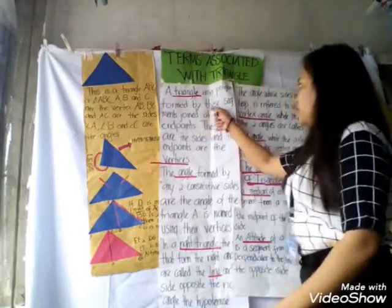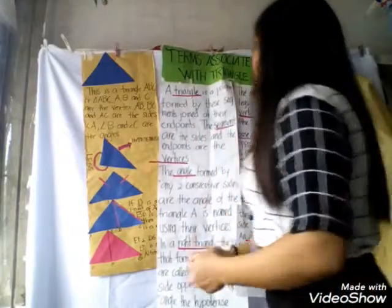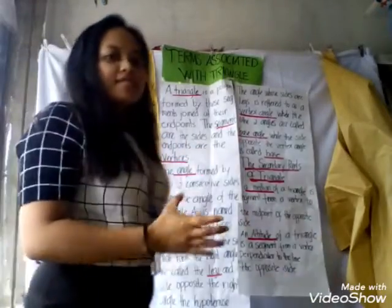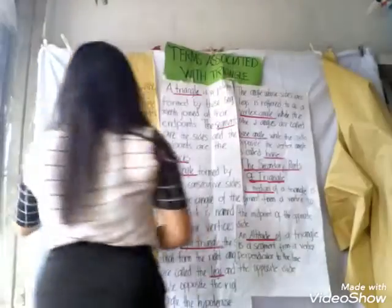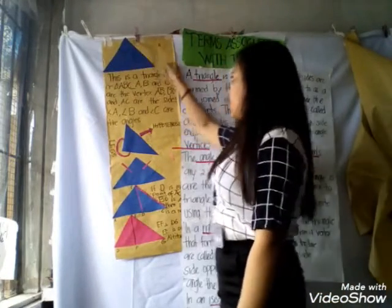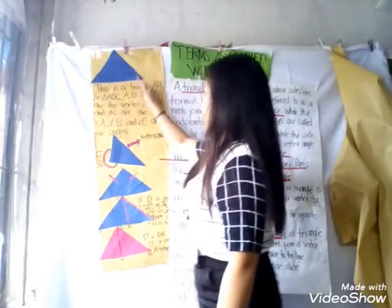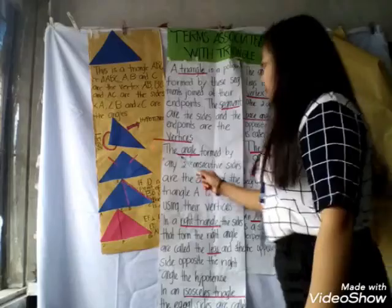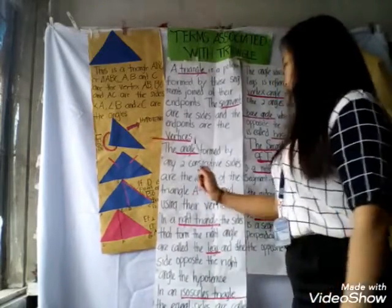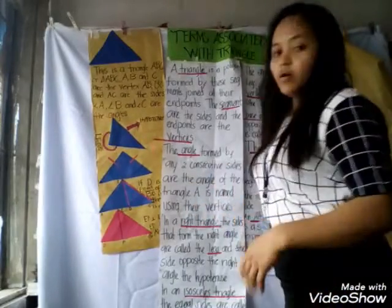A triangle is a polygon formed by segments joined at their endpoints. The segments are the sides and the endpoints are the vertices. We have 3 sides and 3 vertices. The angles formed by any two consecutive sides are the angles of the triangle, named using their vertices.